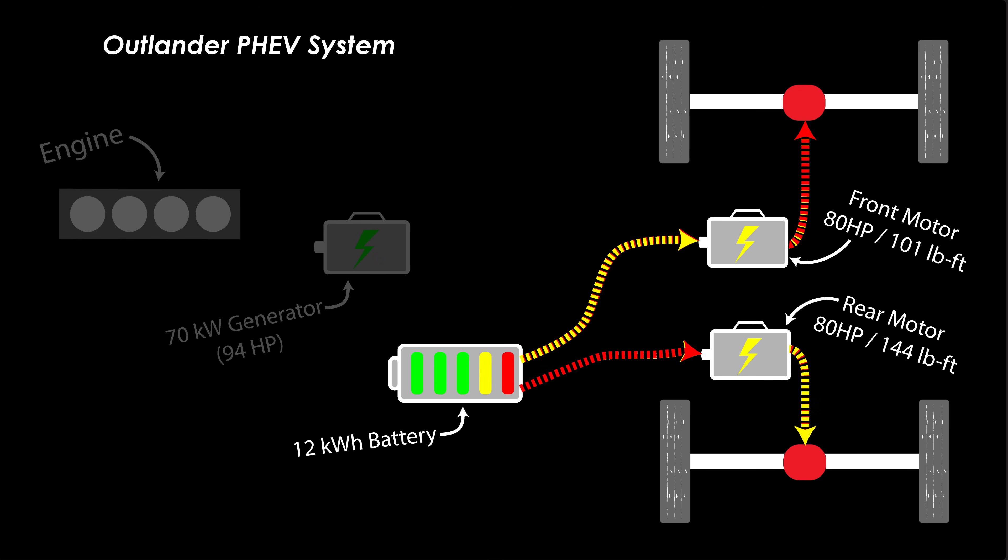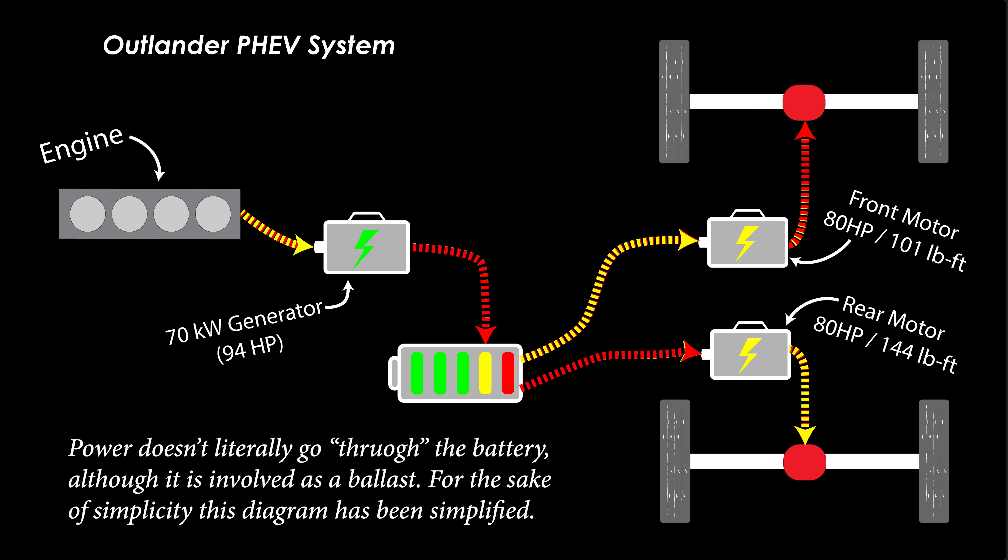If more than 80 horsepower is called upon, the engine will start. The generator then generates power and sends it along to the front and rear traction motors. At this point you're no doubt thinking, didn't Mitsubishi say the system was good for 197 horsepower total? How do you get 197 from two 80 horsepower motors? This is where things get a little bit more complicated to explain.